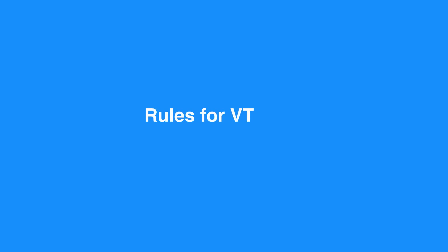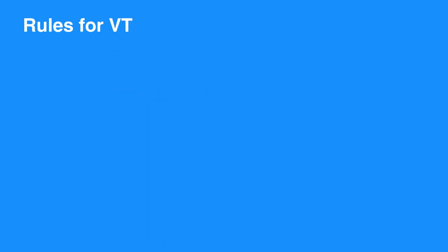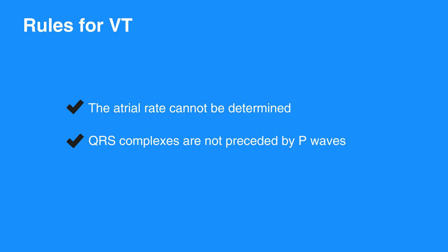The rules for VT include: RR intervals that are usually, but not always, regular. The atrial rate cannot be determined. Ventricular rate is usually between 150 and 250 beats per minute. QRS complexes are not preceded by P waves, though P waves occasionally appear in the strip but are not associated with the ventricular rhythm. The PR interval is not measured since this is a ventricular rhythm. QRS complex measures more than 0.12 seconds and will usually be wide and bizarre, with difficulty distinguishing a separation between the QRS complex and the T wave.